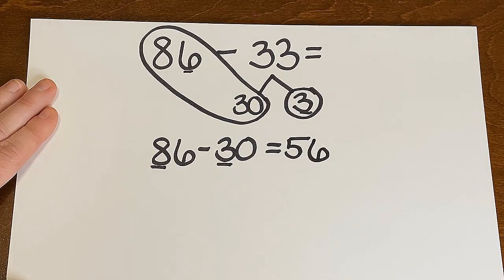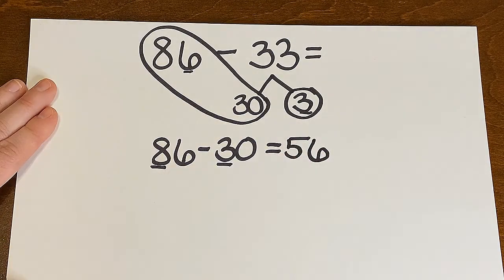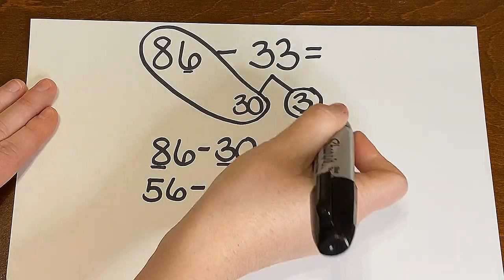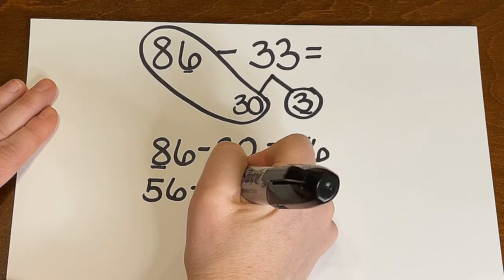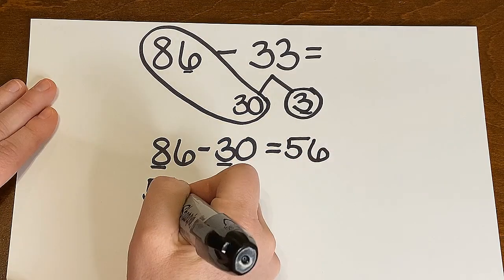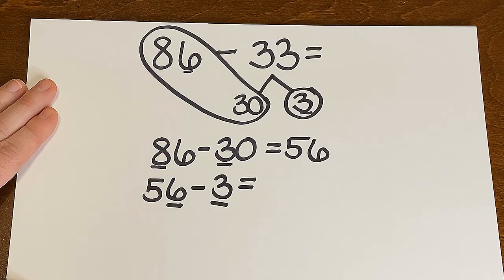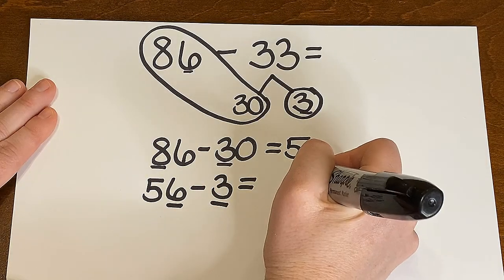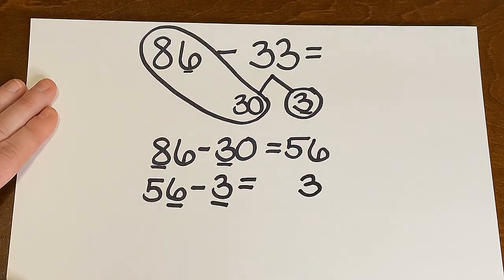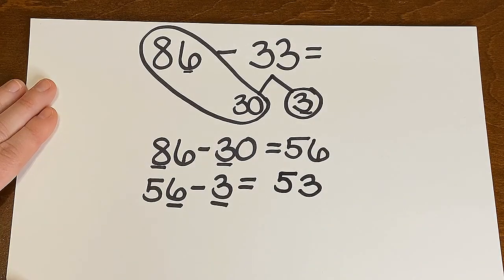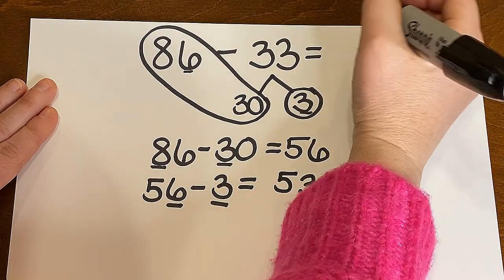All right. Step 2. Now that I'm at 56, I'm going to start with that number. And I simply need to subtract my 3. This time I'm focusing in on the ones. 6 take away 3. Oh, I could do that. That is simple. That is 3 because 3 plus 3 equals 6. But don't forget, I still have 5 tens. So 56 take away 3 is 53.